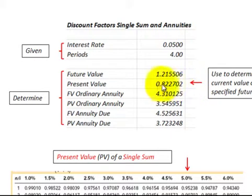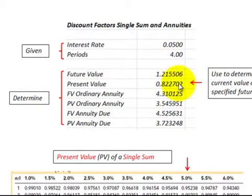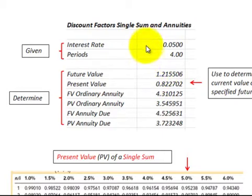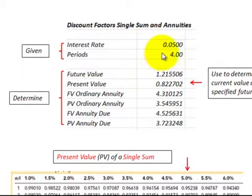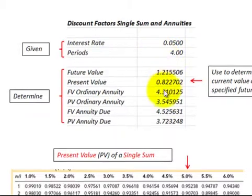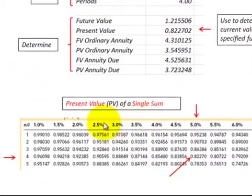We would multiply that future value by this present value factor, and that's what it would be worth today. These factors are based on interest rate and number of periods that they represent. So where do you get these discount factors from?